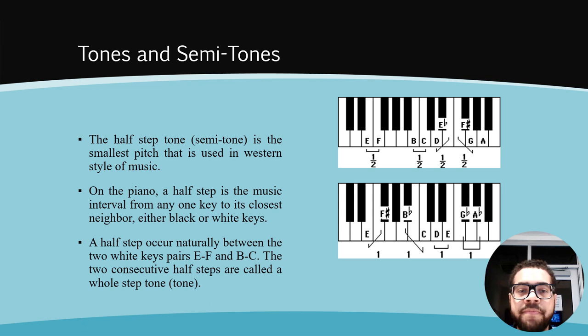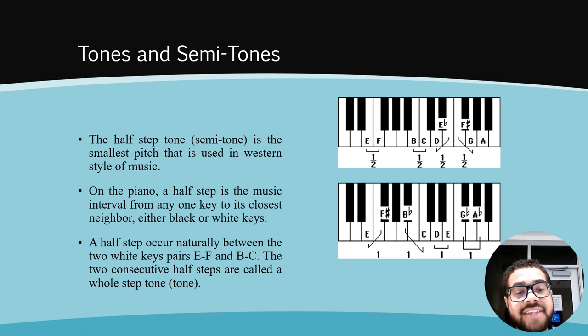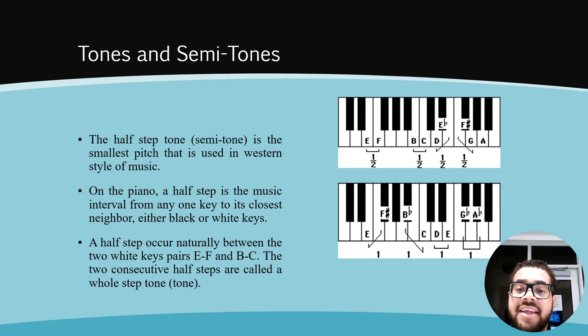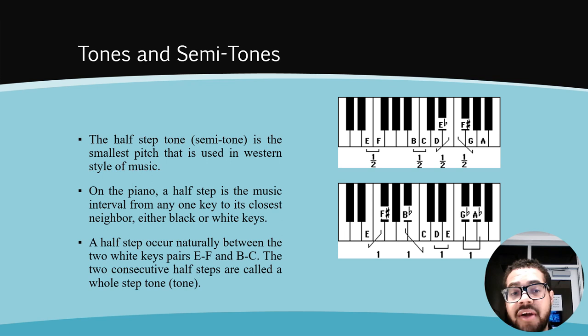Tones and semi-tones. A half-step, or semi-tone, is the smallest pitch interval used in Western music. On the piano, a half-step is the interval from any one key to its closest neighbor, either a black or white key. A half-step occurs naturally between the two white key pairs E through F and B through C. Two consecutive half-steps are called a whole-step, or tone. The examples shown illustrate a semi-tone, also called a half-step, and a whole-step tone, with E and F and B and C being the two white key pairs that form a half-step.